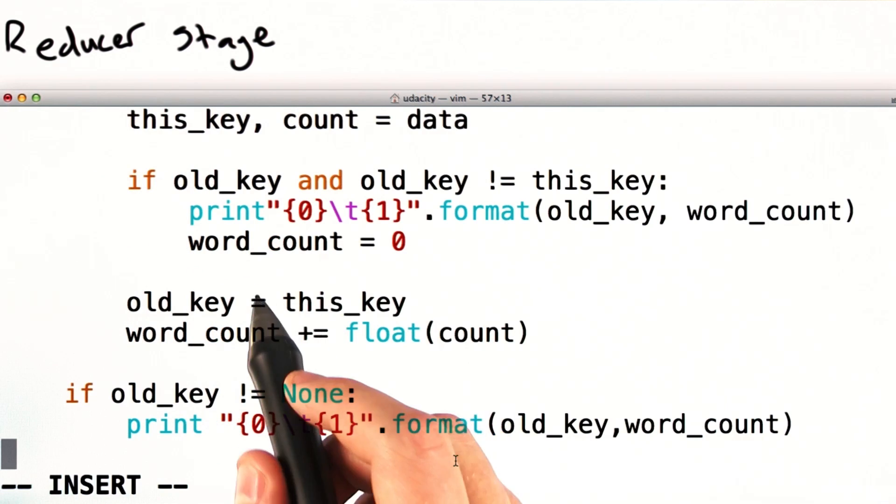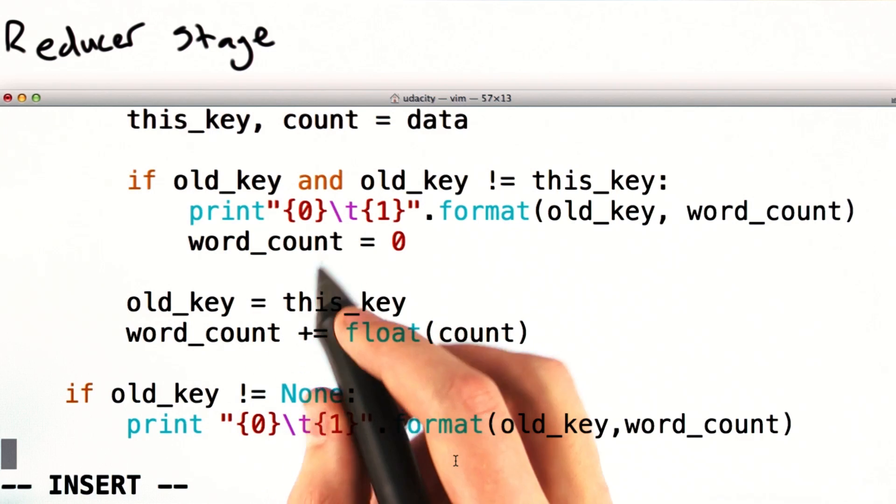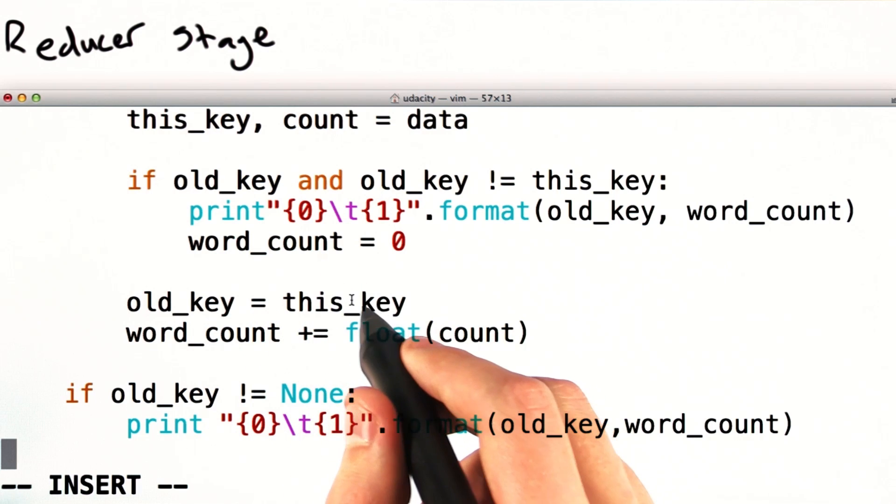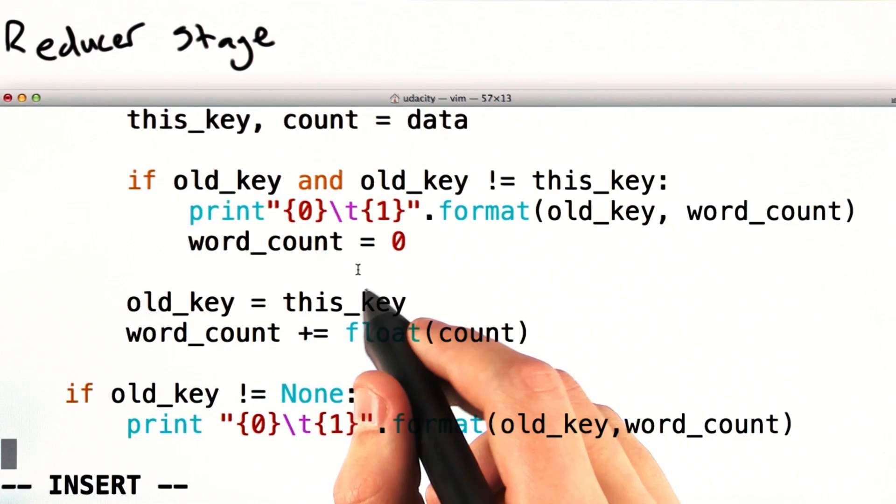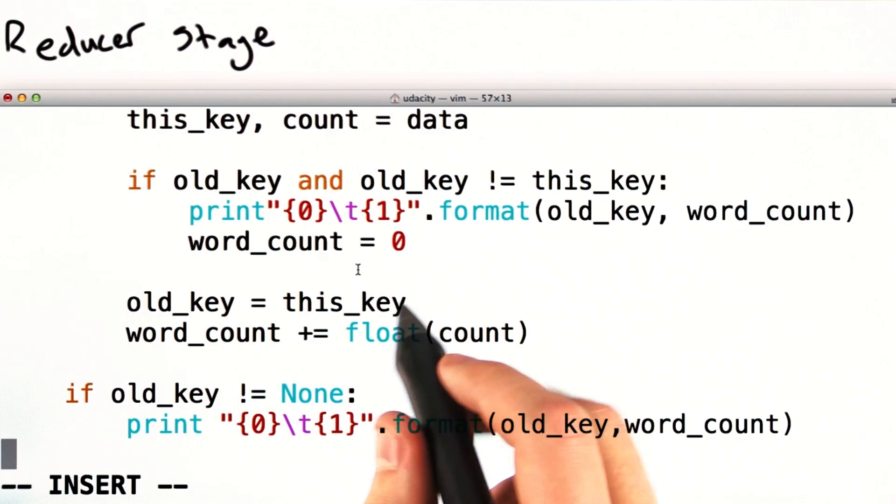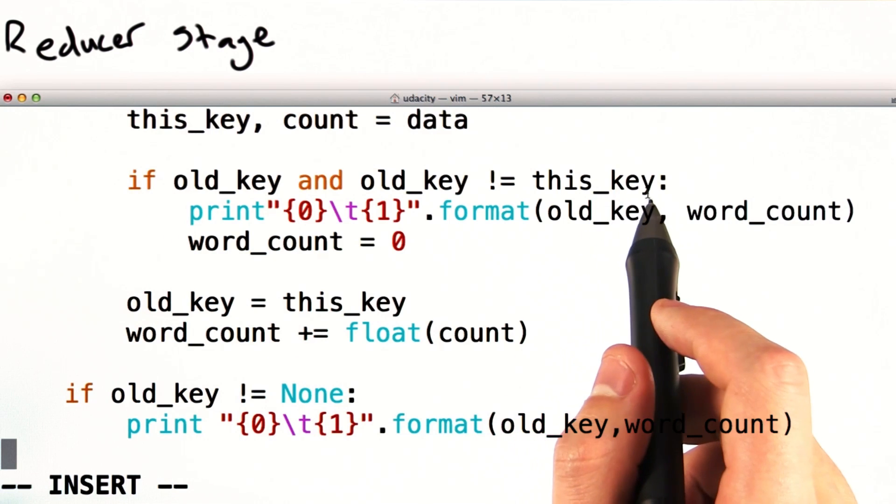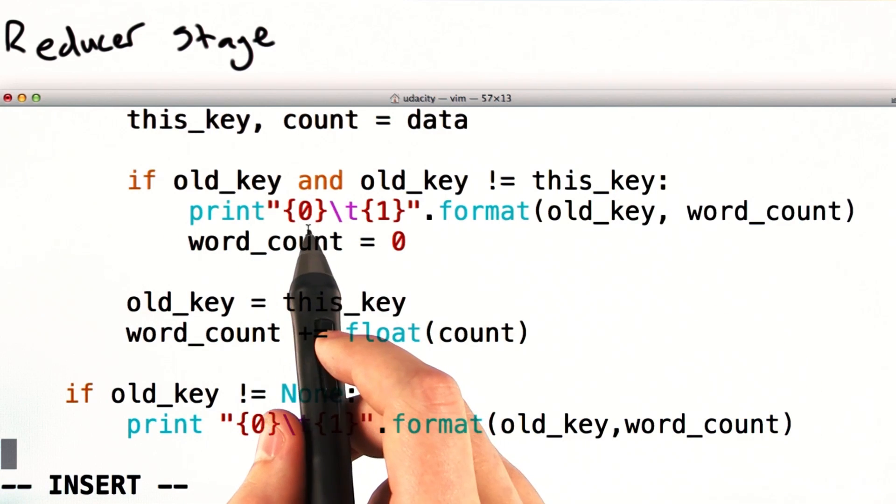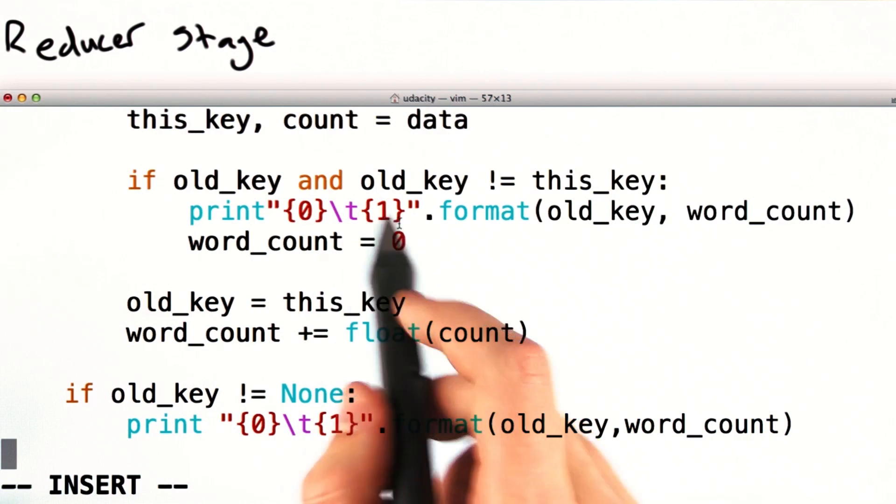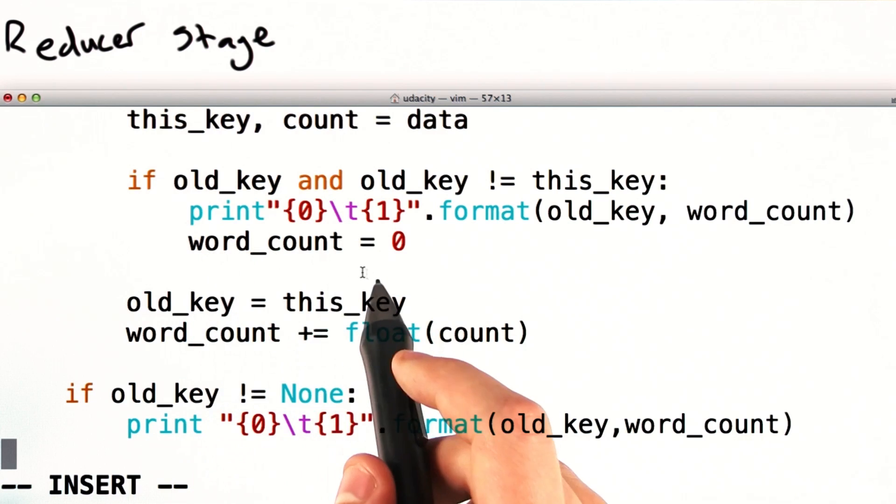All of these lines down here are essentially summing up the count for every single key. We continue through all of the key value pairs for a particular key until we notice that we're on to a new key. Once this happens, we print out the key and its final word count. We then set word count equal to zero once again.